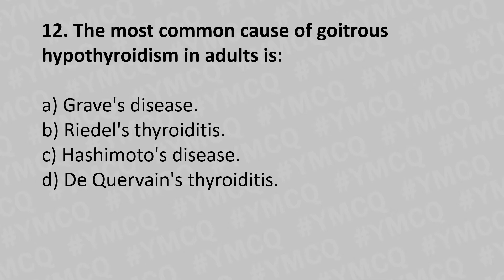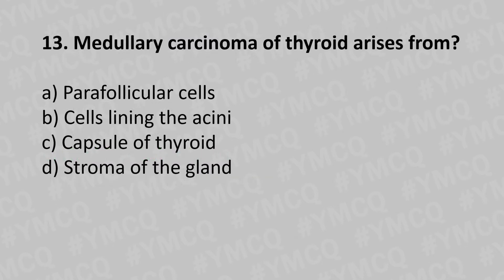Now let's move to question number twelve. The most common cause of goiter with hyperthyroidism in adults is: option A - Graves' disease, option B - Riedel's thyroiditis, option C - Hashimoto's disease, option D - De Quervain's thyroiditis. The answer is option C - Hashimoto's disease.